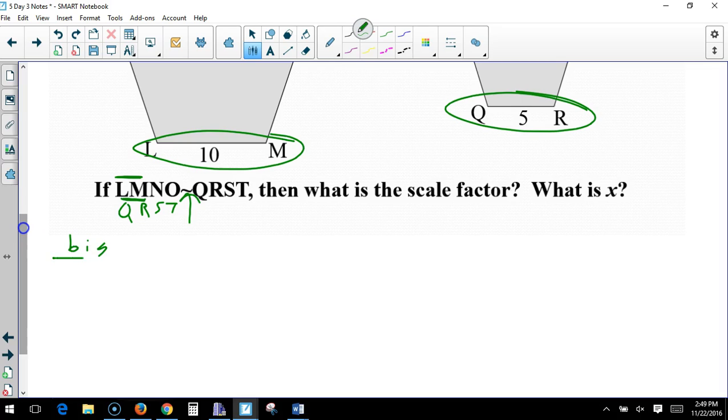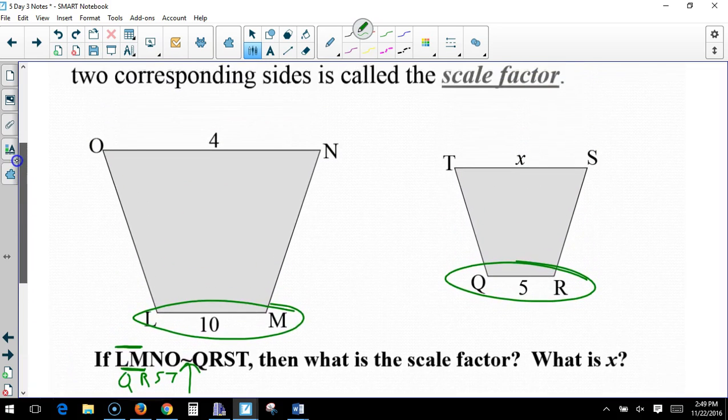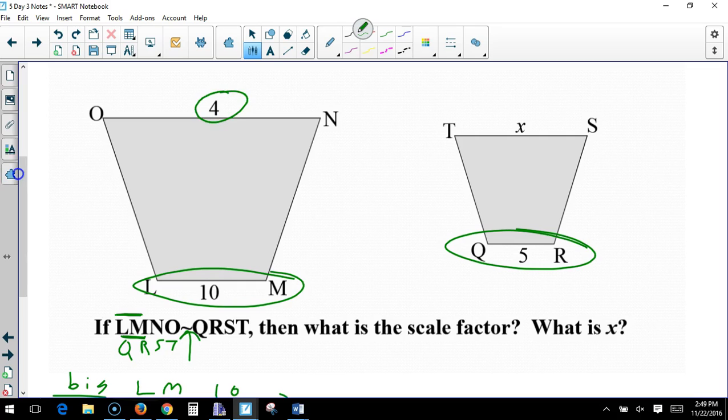So, the big one is being compared to the small one. And these are the little things you can put on the outside to remind yourself. So, let's talk about LM being compared to QR, which is 10 to 5, which is 2. So, the big one is 2 times the small one. Also, the small one is 1 half the big one. We can look either direction. So, if this is 4, then this is going to be 2.